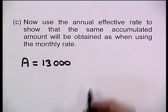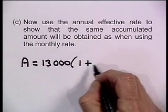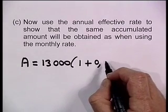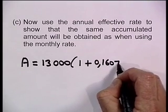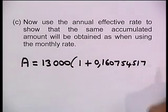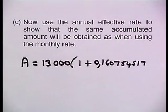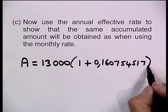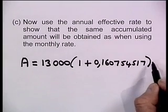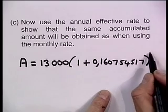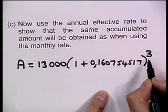That's 13,000 times (1 + i_eff) — now we take that whole decimal. Notice how we use the full decimal for maximum accuracy, and we raise that to the power of... be very careful: is it 36 or three? Remember, annual is three years, so it's going to be three. The compounded monthly produced 36 months, but with the annual effective rate we use three years.